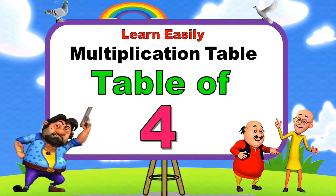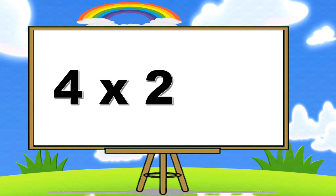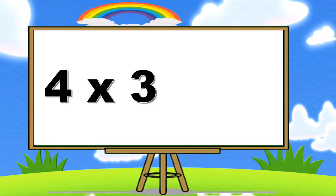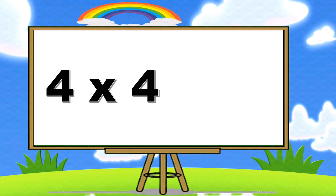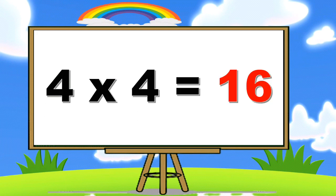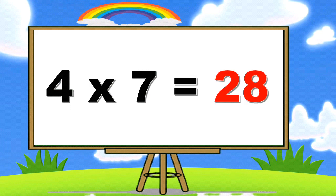Table of Four. Four ones are four, four twos are eight, four threes are twelve, four fours are sixteen, four fives are twenty, four sixes are twenty-four, four sevens are twenty-eight.